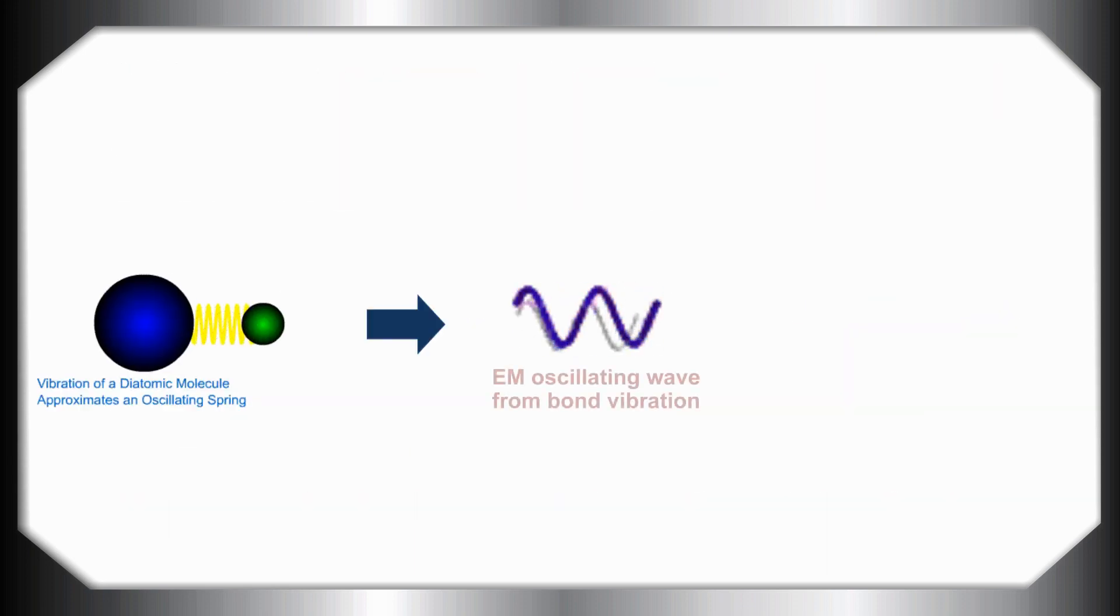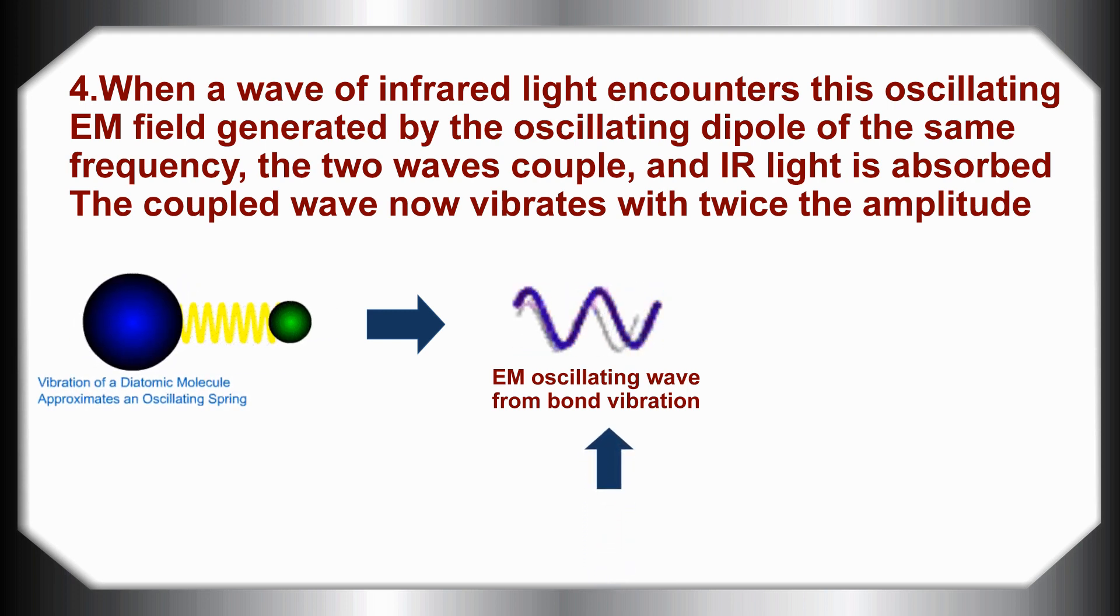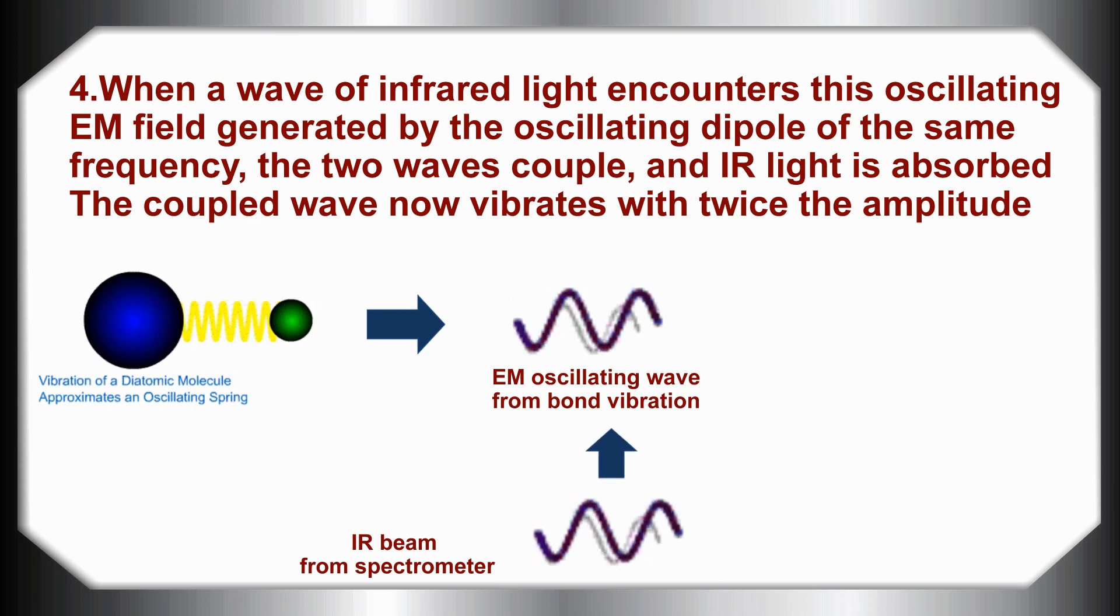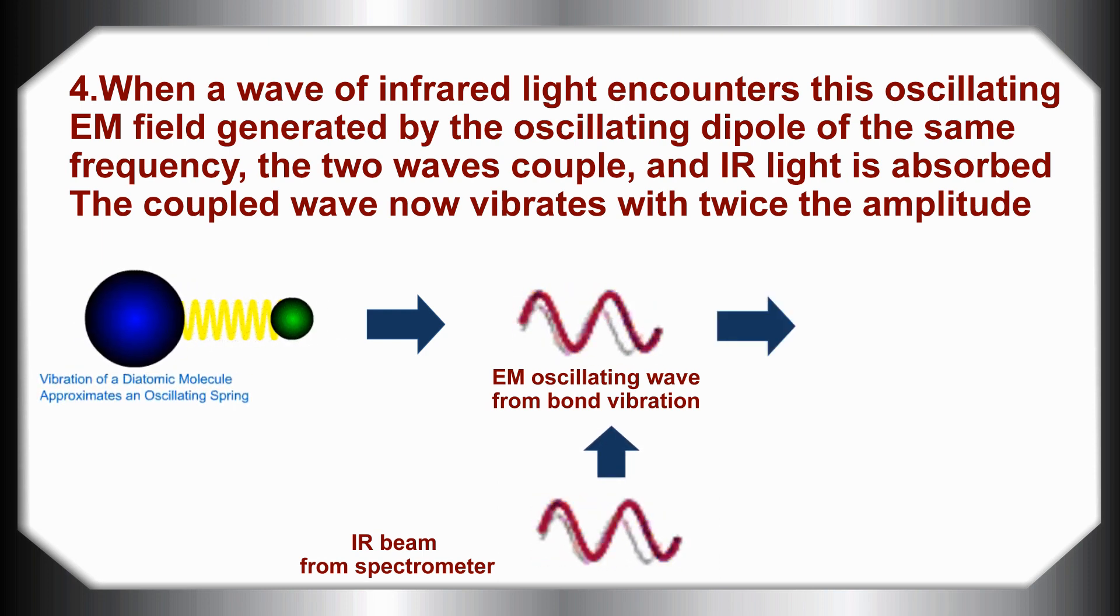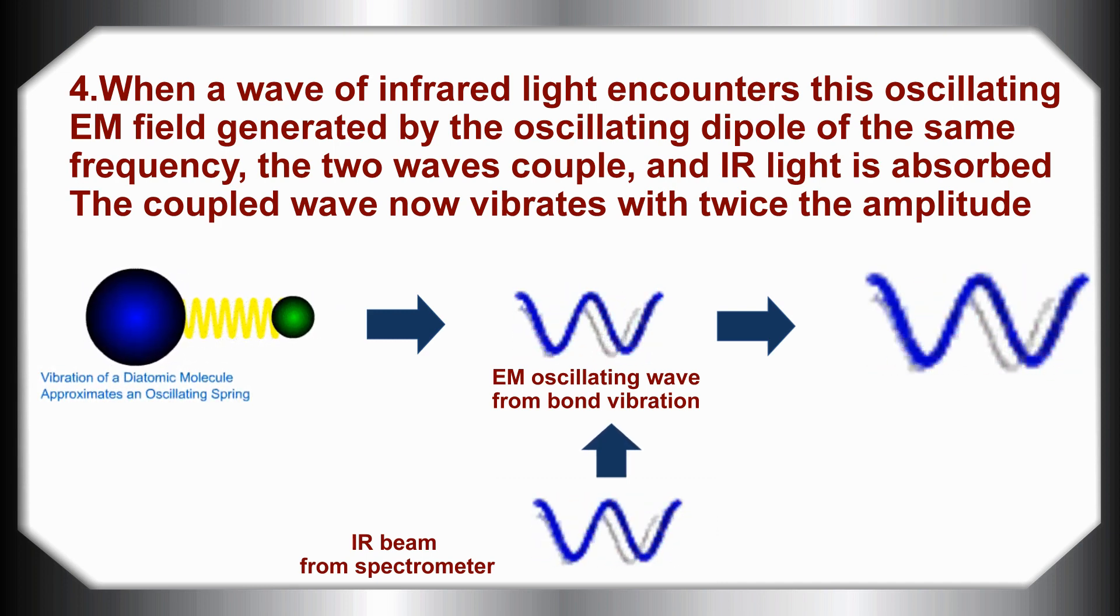When a wave of infrared light encounters this oscillating electromagnetic field generated by the oscillating dipole of the same frequency, these two waves couple and IR light is absorbed. The coupled wave now vibrates with twice the amplitude, as shown in this animation.